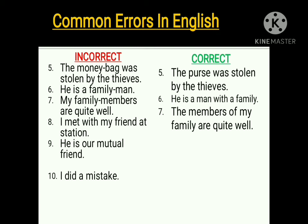The eighth one: 'I met with my friend at station.' 'Met with' is incorrect here. In any tense — past or present — when you use 'with' with the verb 'met,' it implies an accident. 'Met with' means 'met with an accident.' When you are using the preposition 'with,' it will indicate an accident. So when meeting your friend, you must exclude the preposition. You should say 'I met my friend at the station.' Using 'with' gives a wrong impression.